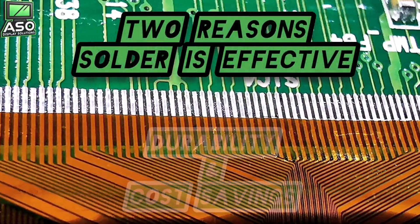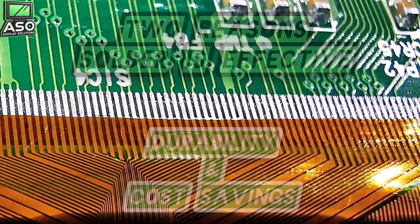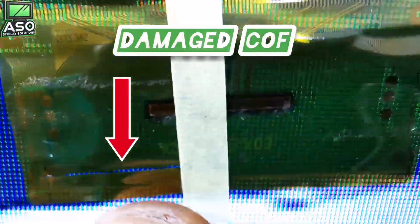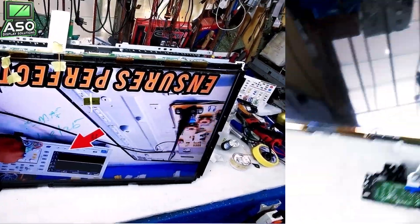Number one, you get a really strong bond on the PCB side. And number two, you get to save money because you do not need ACF for the PCB side.